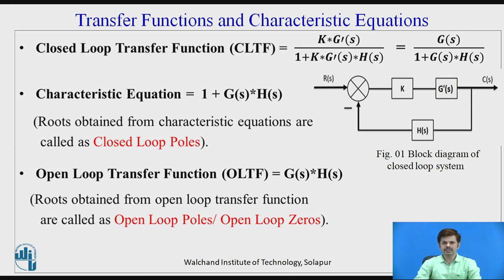Transfer function and characteristic equations. As you can see in figure one, which represents the block diagram for a closed loop control system, the blocks K and G-dash of S are transfer functions in the forward path, whereas H of S is the block with transfer function in the feedback direction. This closed loop system is a negative feedback system. The closed loop transfer function is written as K·G-dash(S) divided by 1 plus K·G-dash(S)·H(S). Substituting, this becomes G(S) divided by 1 plus G(S)·H(S).